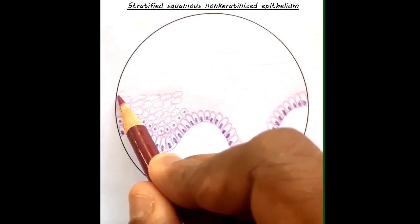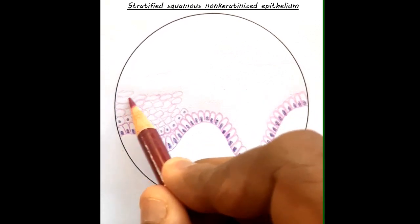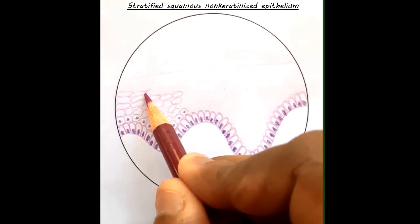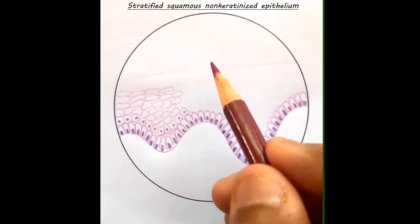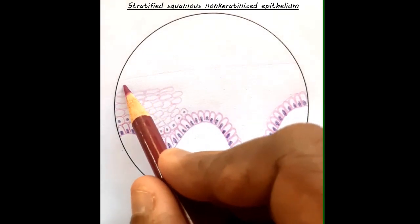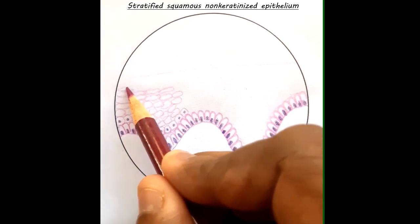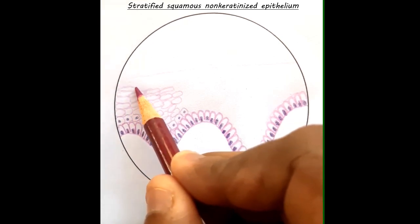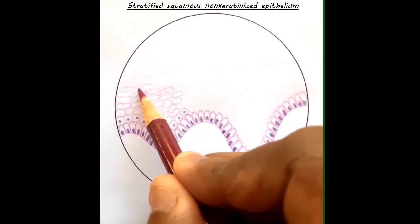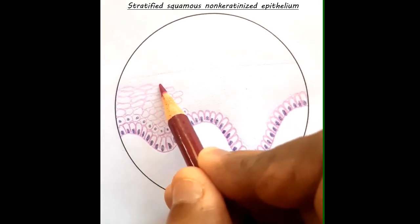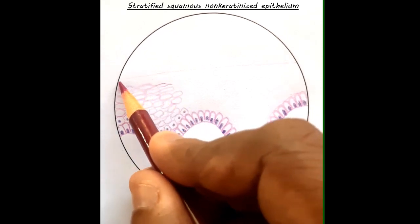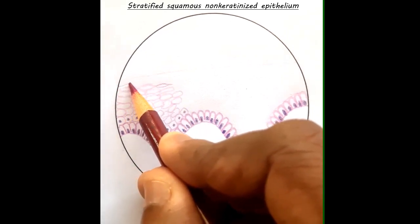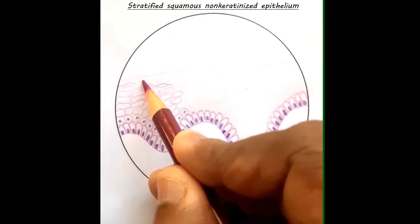So the next layer, now we are drawing almost the sixth layer. See the shape of the cells, they are much more flat. Now we are slowly coming to the layers where it is almost assuming a squamous shape, the shape of the squamous cells. Now further up, it will be much, much more closer to the shape of the squamous, almost flattened.